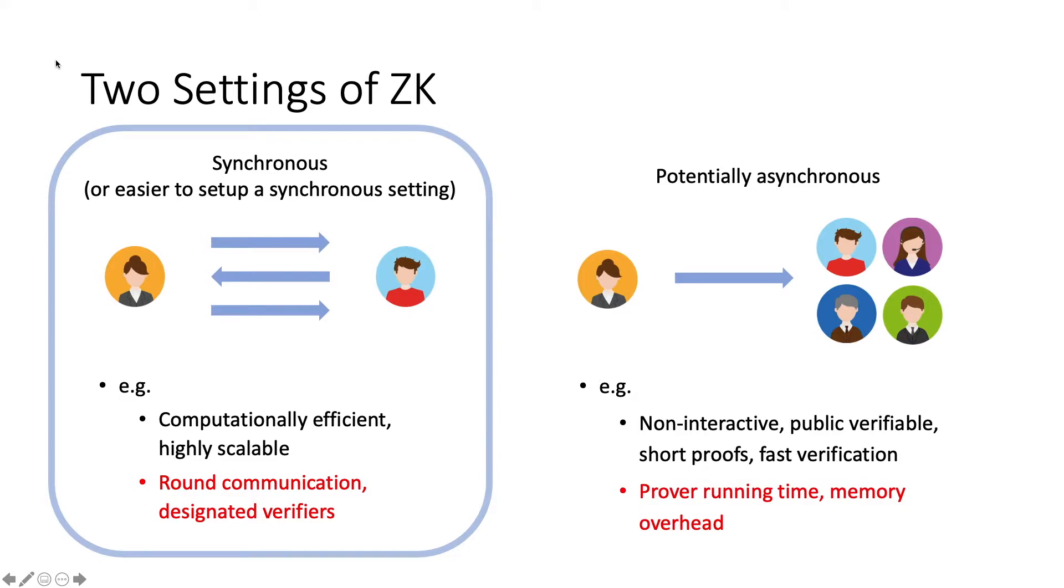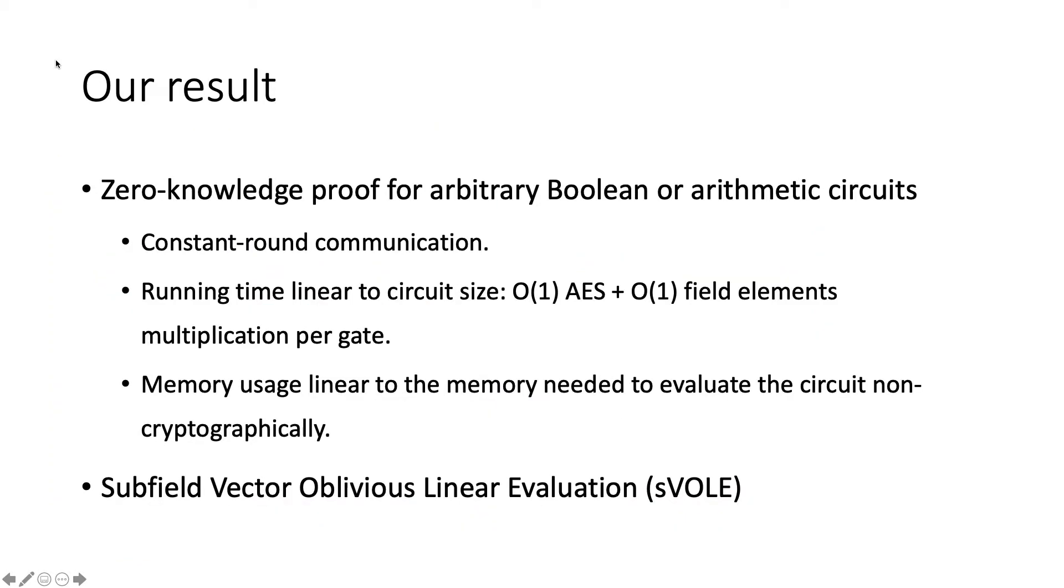Asynchronous protocols are good, but in some scenarios, the prover only needs to prove knowledge to several designated verifiers. These parties can be online at the same time as round communications are allowed. In these situations, public verifiability is not a need, but we need a protocol that is more efficient and more scalable. Here is our result. We designed an interactive zero-knowledge proof protocol for arbitrary Boolean and arithmetic circuits. It has constant round communication with an interactive offline phase and an almost non-interactive online phase.